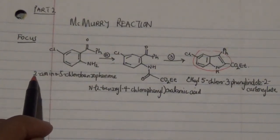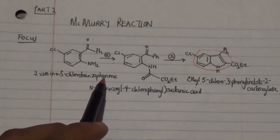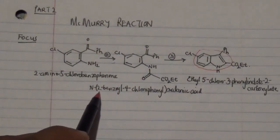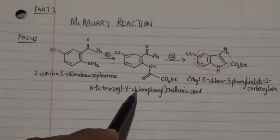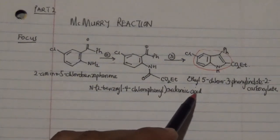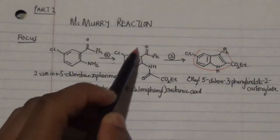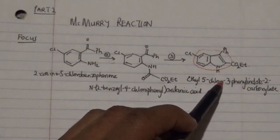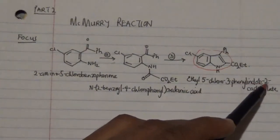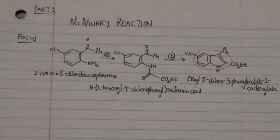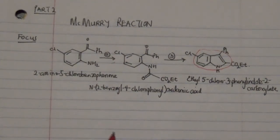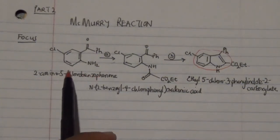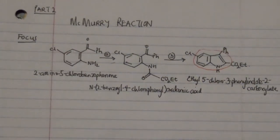We're going to transform 2-amino-5-chlorobenzophenol into 2-benzenol-4-chlorophenyl oxylamic acid, and then transform this using a particular process into ethyl-5-chloro-3-phenylindole-2-carboxylate. I know these are really complicated names — you don't have to memorize them. You just need to know how to translate a name into its structure.